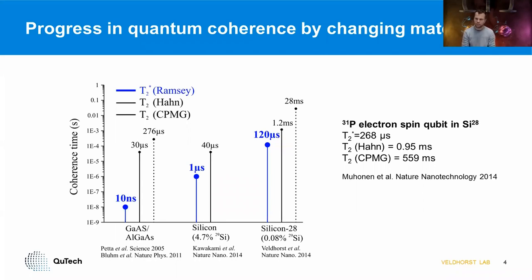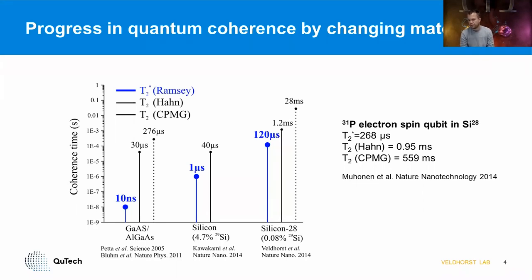Using phosphorus qubits in silicon-28, coherence times beyond half a second have been realized. By changing materials, really remarkable progress has been made. At the same time silicon has its challenges — valley degeneracy, a rather large effective mass requiring very small quantum dots, and disorder. So silicon may not be the ultimate material, at least as it currently stands.